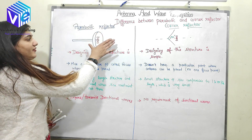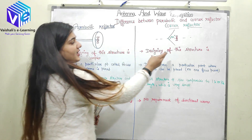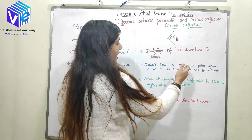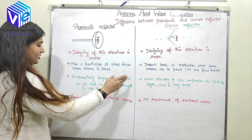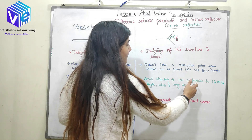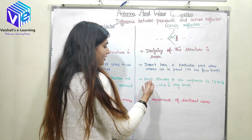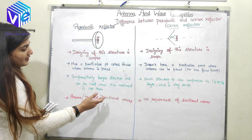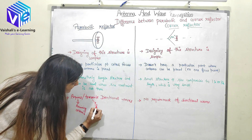To summarize: the parabolic reflector has a complex design while the corner reflector design is simple. The parabolic reflector has a particular focus point where the antenna must be placed, but the corner reflector allows the antenna to be placed anywhere in front of it. The parabolic reflector is a comparatively larger structure used when there is no size constraint, while the corner reflector is small — comparable to one or two lambda in size. The parabolic reflector requires or transmits directional waves, whether acting as a receiving or transmitting antenna. The corner reflector has no such requirement for directional waves.